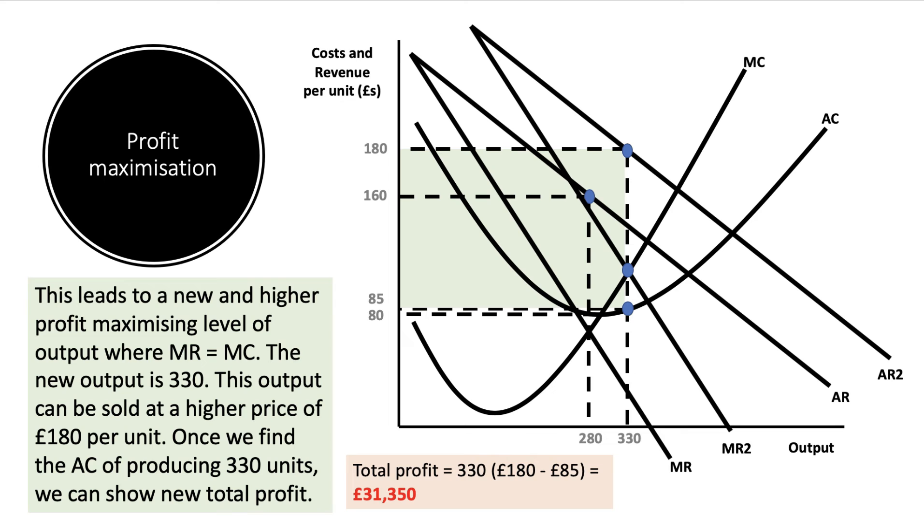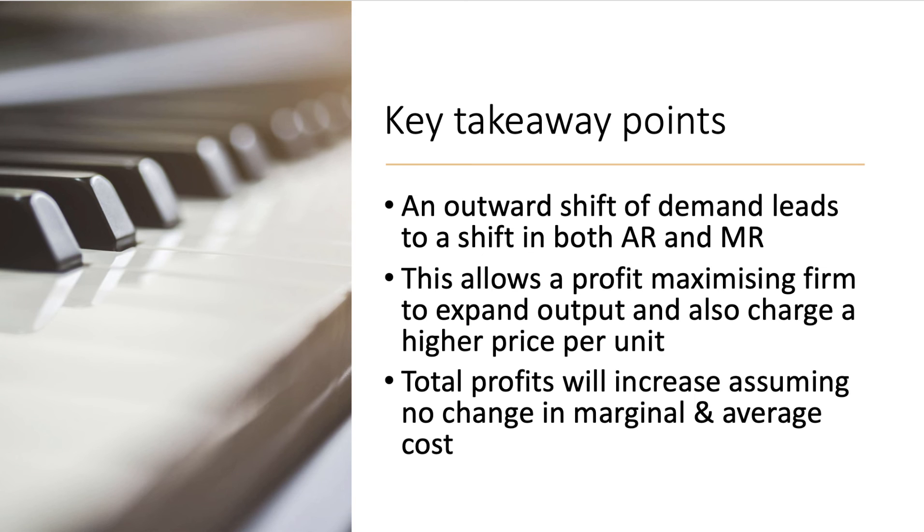Key takeaway points: an outward shift of demand leads to a shift in both AR and MR. A lot of students only shift the average revenue curve - don't forget to shift the MR curve as well. This allows a profit maximizing firm to expand their production and also charge a higher price per unit. Total profits will increase assuming there's no change in marginal and average cost.